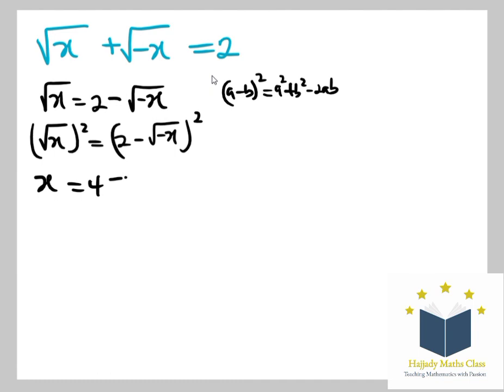So solving this further, I'm going to have x + (-x) - 4 = -4√(-x). So I have 2x - 4 = -4√(-x).